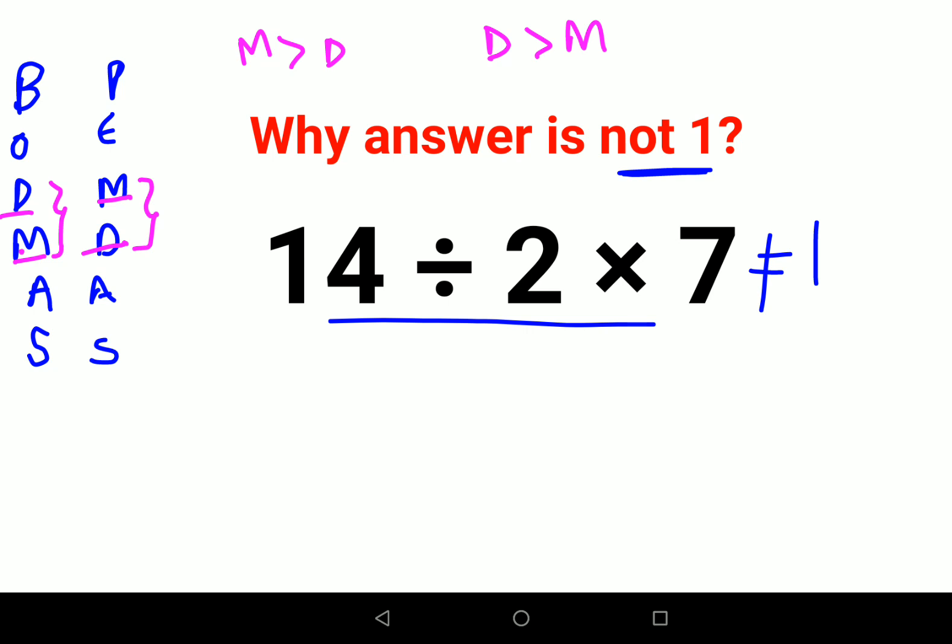So in this kind of a sum where you just have a division and a multiplication to look at, then in that case how do you do it? Here the basic rule is: if a question just has division and multiplication, then you always go from your left to your right.